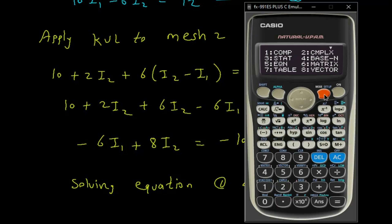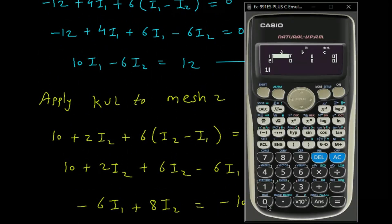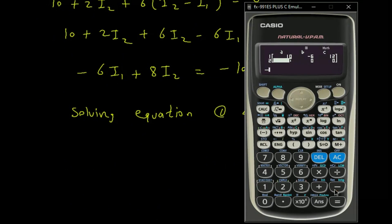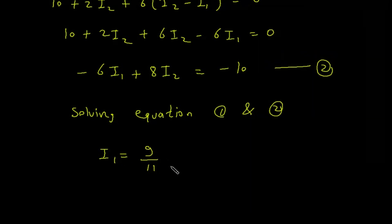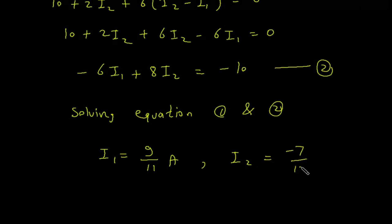Now solving equations 1 and 2 simultaneously, we get I1 equal to 0.818, or 9 by 11 A, and I2 equal to minus 7 by 11 A.